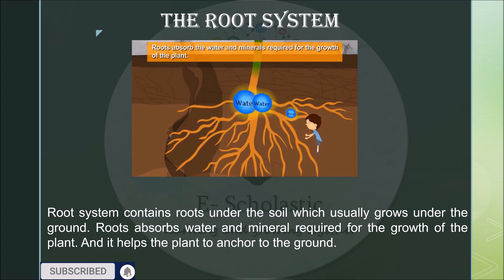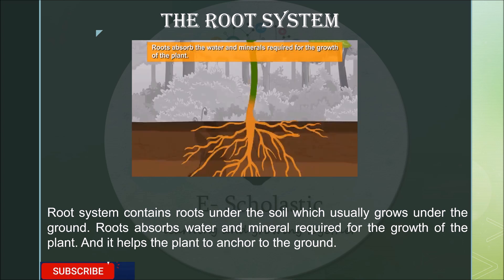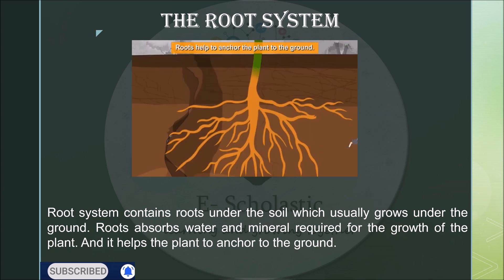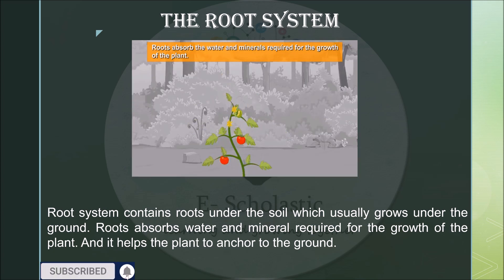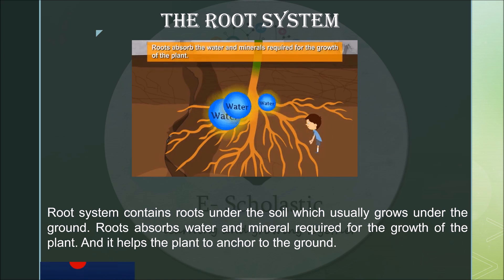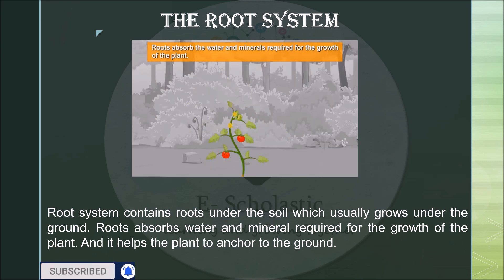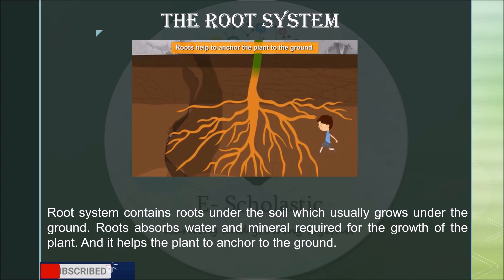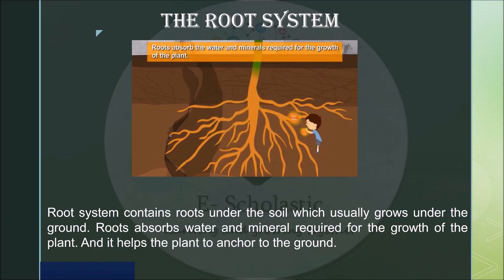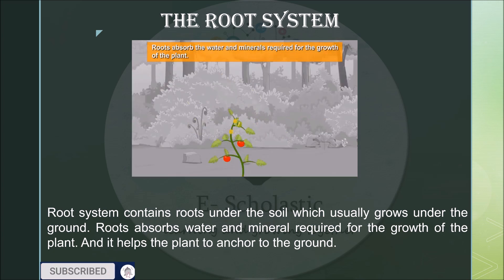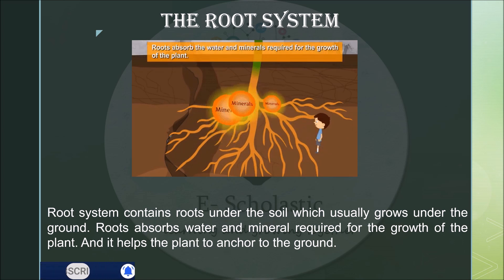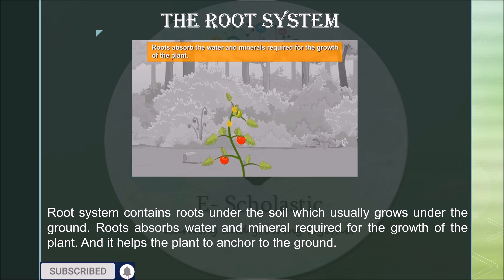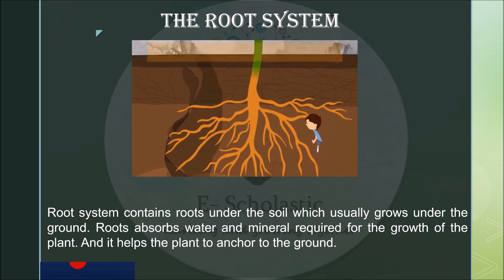The root system contains roots which are under the soil and usually grow under the ground. As for the function, roots absorb water and minerals required for the growth of the plant. Roots also help the plant to anchor to the ground — that means they help the plant to stand erect.